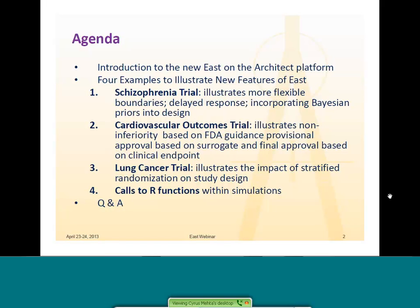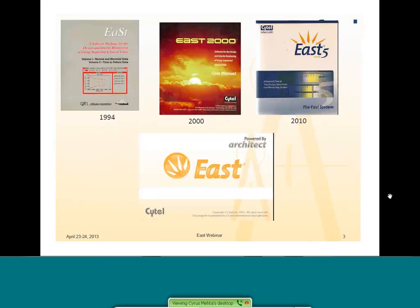I have four examples lined up. It may be that I can't do all four in the one hour we have, in which case I'll do examples one, three, and four — schizophrenia, lung cancer, and calls to R functions — and then if there's time, I'll go back and do the cardiovascular outcomes trial as well. So without further ado, let's get started.